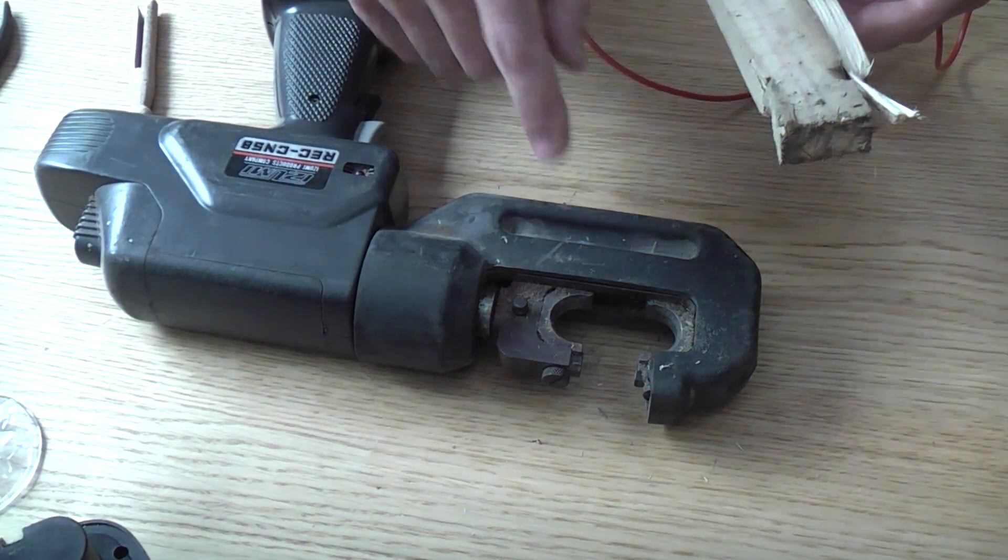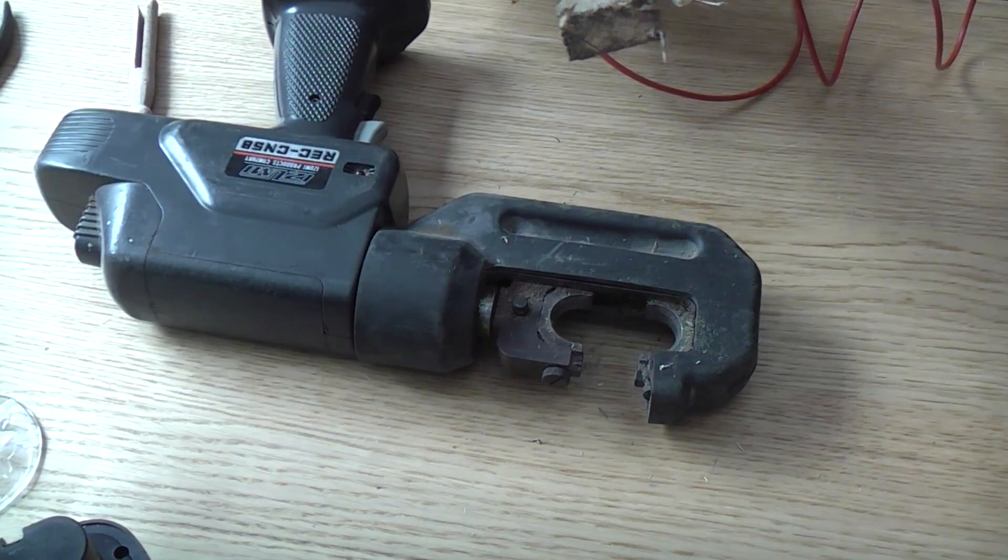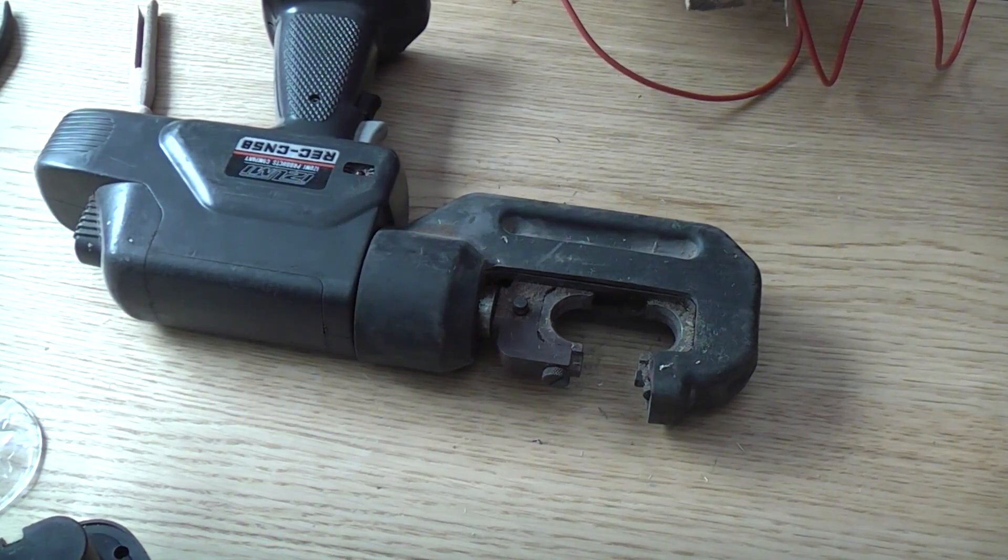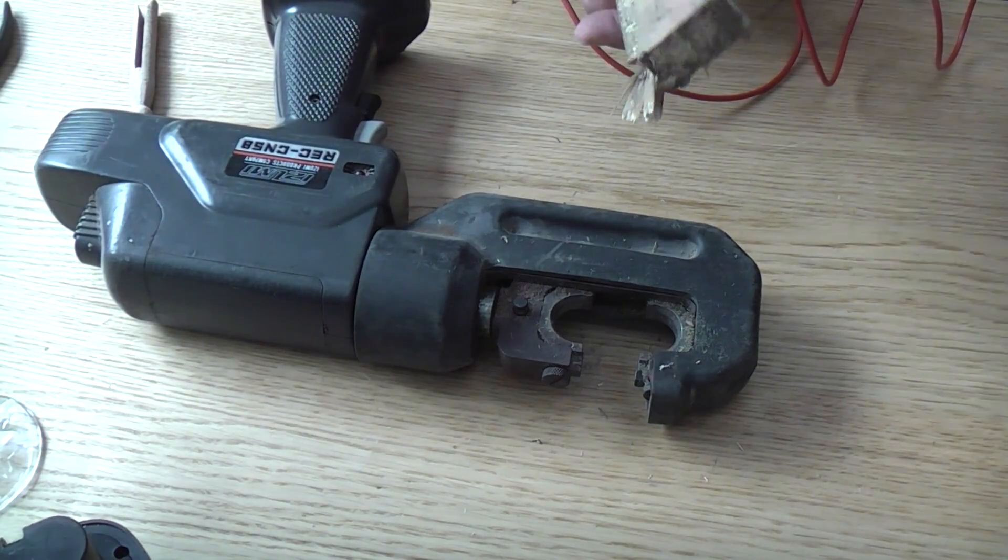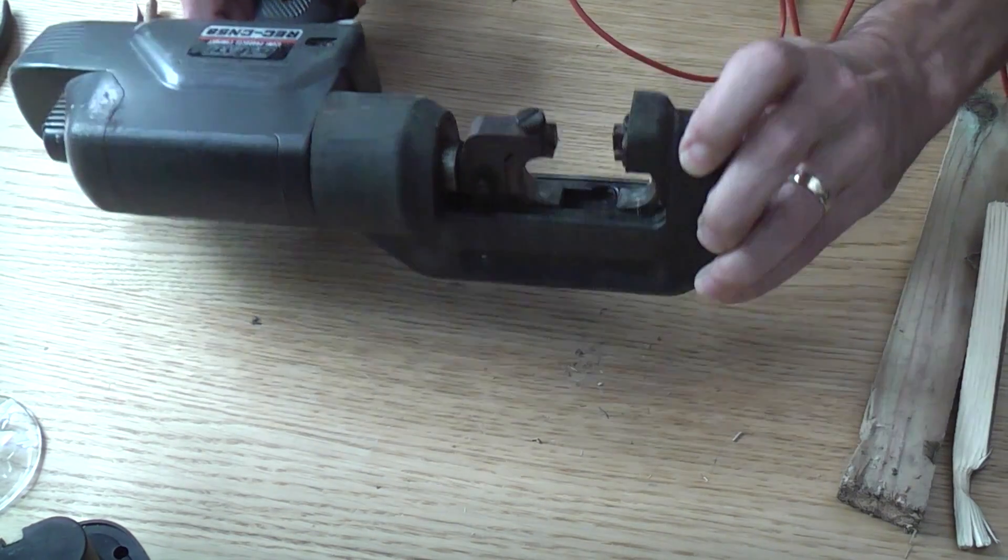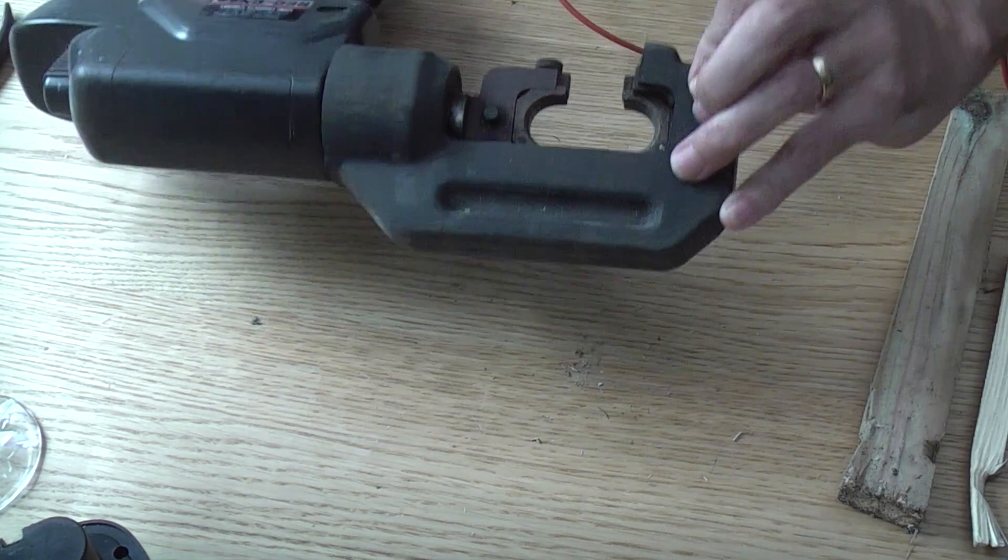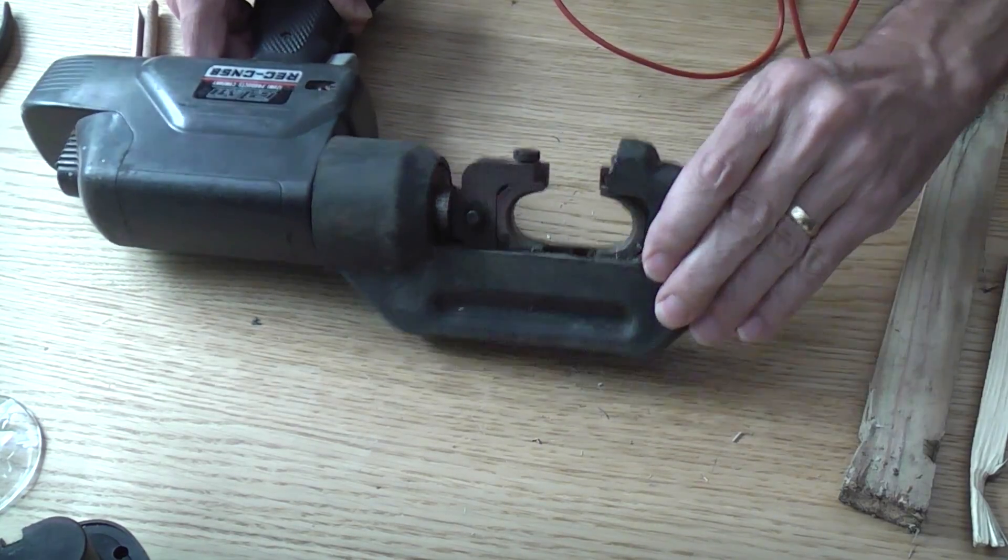But you can see how if you had a pipe and you wanted to crimp a metal sleeve around it or something like that, there's a lot of pressure there with the right tool in it.